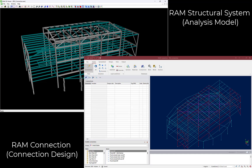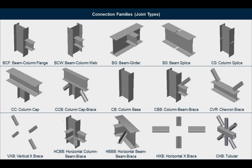Welcome to the Bentley Systems training course where we will show you how to design steel connections in RAM Connection for an analyzed RAM Structural System model. During the connection design process we will assign connections to the different joints using the RAM Connection database of predefined connection templates, which are separated into different connection families. For this video we will be designing the shear connections for the gravity beam-girder joints according to the AISC 16 specification that has already been specified in RAM Connection.